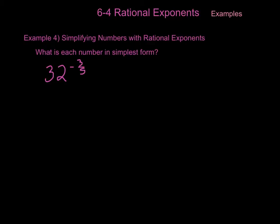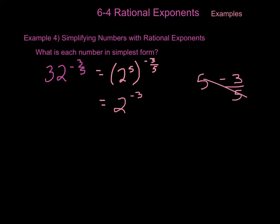Now we're going to simplify numbers with rational exponents. What is each number in simplest form? First, we have 32 to the negative 3 fifths power. There are two methods we can use. The first method uses properties of exponents. We know that 32 can be rewritten as 2 to the 5th power. When you raise a power to a new power, you multiply the exponents together. This gives us 2 to the negative 3rd power, since the 5's cancel out. However, we're not allowed to have negative exponents, so this gives us 1 over 2 cubed. 2 cubed is 8, leaving us with 1 over 8.